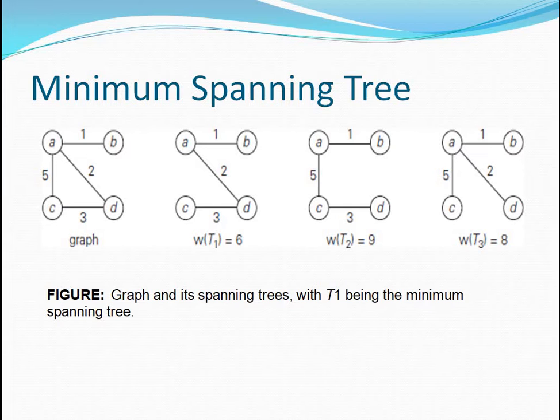Out of these three graphs, the first tree T1 has a weight of 6, whereas T2 has a total weight of 9 and T3 has a total weight of 8. So out of these three, T1 has the least weight which is 6. This is the spanning tree with minimum weight, so we call T1 the minimum spanning tree for the given graph.